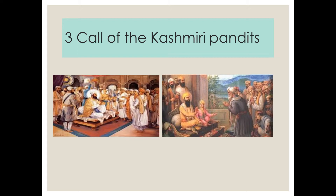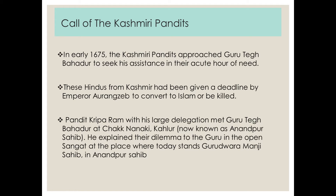The third is the call of the Kashmiri Pandits. In this picture you can see the delegation of Kashmiri Pandits who had come to Guru Tegh Bahadur Ji to seek his blessing and protection, because Aurangzeb was on a spree of conversion. In early 1675, these Kashmiri Pandits met Guru Tegh Bahadur Ji because they needed his assistance and protection. These Hindus living in Kashmir had been given a deadline by Emperor Aurangzeb: get converted to Islam or be killed. Pandit Kirpa Ram with his large delegation came to meet Guru Tegh Bahadur Ji at Chak Nanki, now known as Anandpur Sahib, and explained the dire situation.